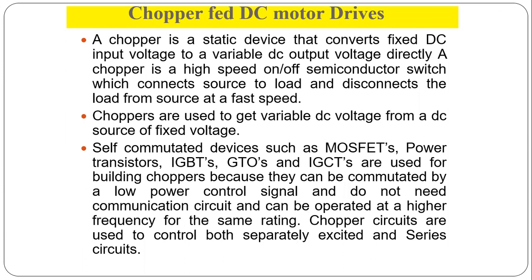Self-commutated devices such as MOSFET, power transistor, IGBT, and GTO are used for building choppers because they can be commutated by a lower power control signal, do not need a commutation circuit, and can be operated at a higher frequency.